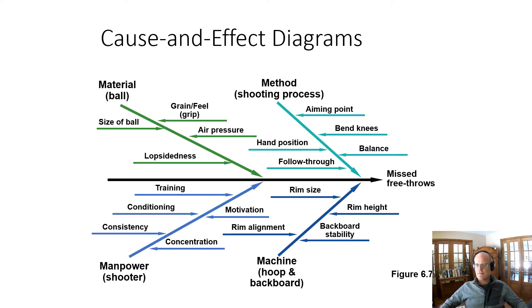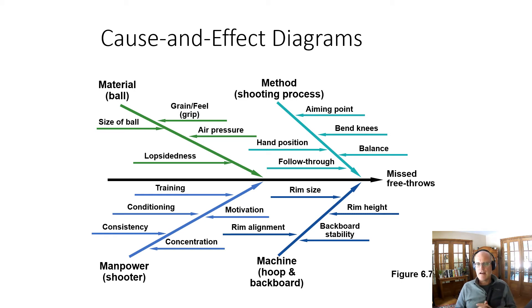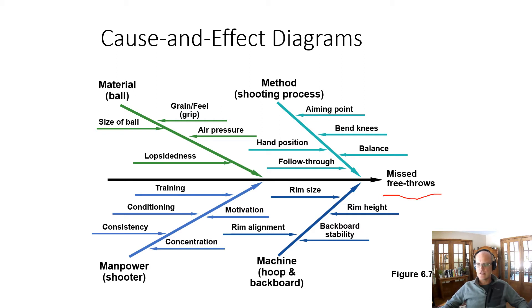For example, with missed free throws in basketball, it could be an equipment issue — the backboard isn't stable, the rim height is wrong, the rim size is wrong, the alignment is wrong. These are brainstorming approaches that allow you to come up with a whole bunch of things that could be contributing to your process and then start to measure or track those to see if they're true. It could be the shooter — training, practice, motivation, concentration — or it could be the approach: hand position, follow through. This provides a laundry list of things that could potentially be causing the error or the problems that are occurring.